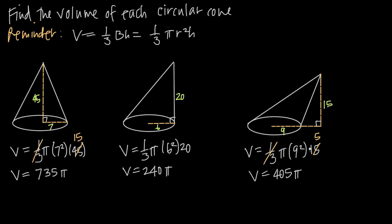The important thing is not where the angle is — whether it's in the center of the base, on the edge of the cone, or outside the cone. The important thing is that we have a 90-degree angle, and wherever we have that 90-degree angle, that's the height we want to use. If we had been given a slant height, we would not have wanted to use that. So in all three cases, we use the height at the 90-degree angle, giving us volumes of 735π, 240π, and 405π respectively.